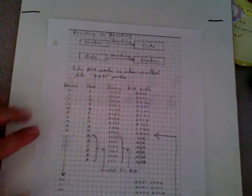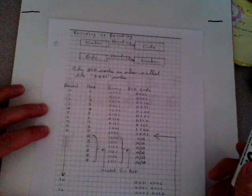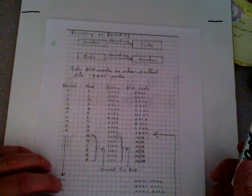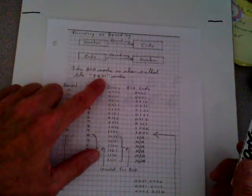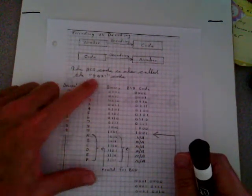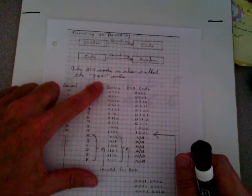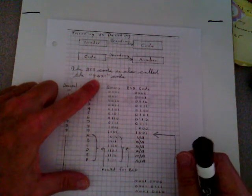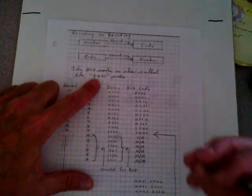Now let's take a look at the BCD code. Binary coded decimal is also referred to as the 8421 code because each of the bit positions represents a power of 2: the first position is 1, the second is 2, the third is 4, and the fourth is 8. There are many different codes — an 8441 code, an 8421 code — but the 8421 code is the most popular BCD code, so we just refer to it as BCD.